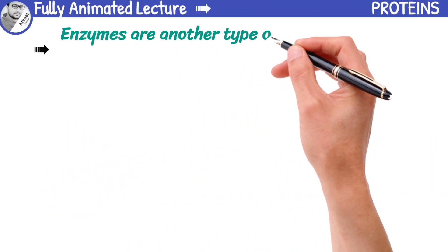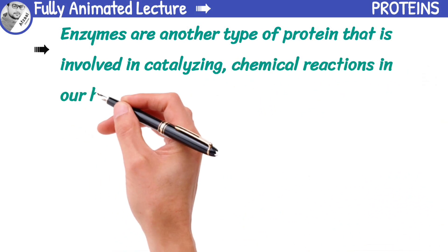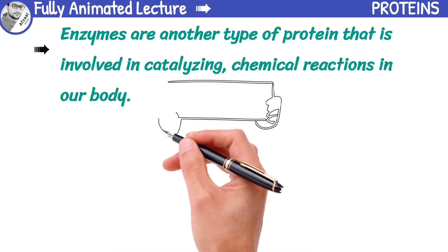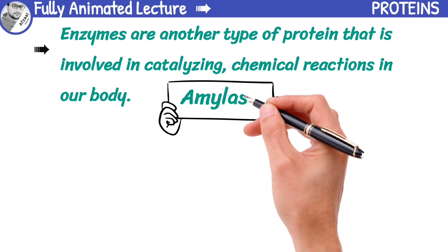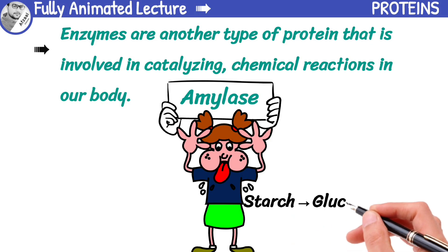Enzymes are another type of protein that is involved in catalyzing chemical reactions in our body. One example of an enzyme is amylase, found in saliva. It breaks down starch molecules into smaller glucose and maltose molecules.